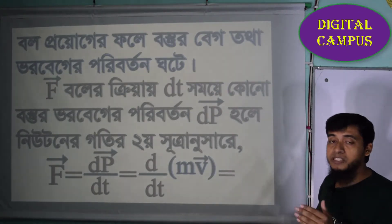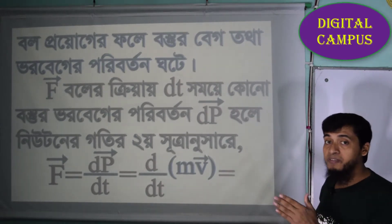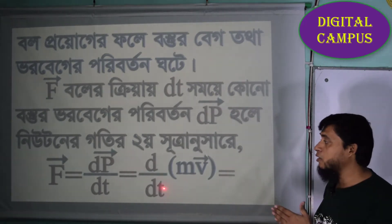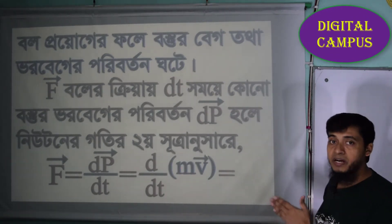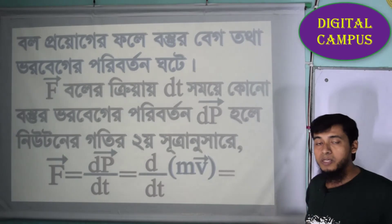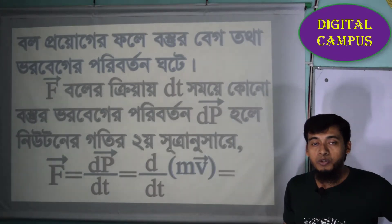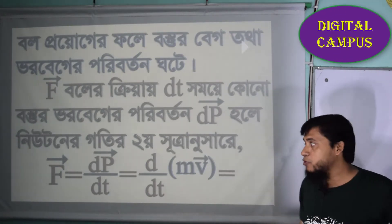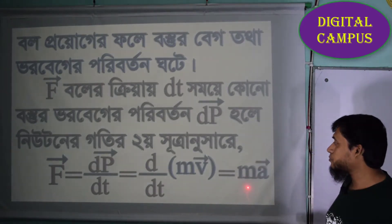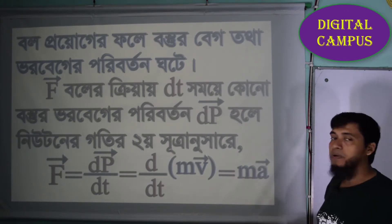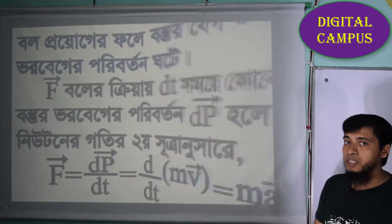So if we know that a equals to dv by dt, then we have m into dv by dt, which gives us m times a. So force F equals m a.